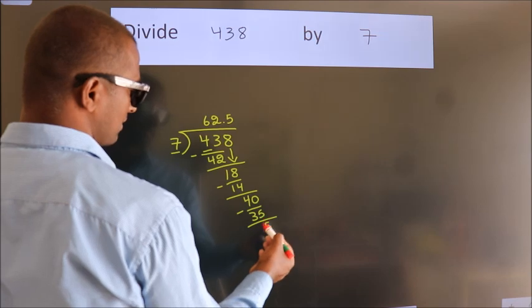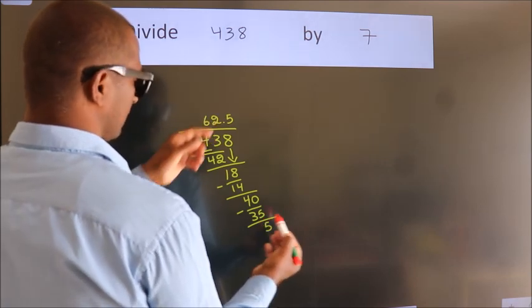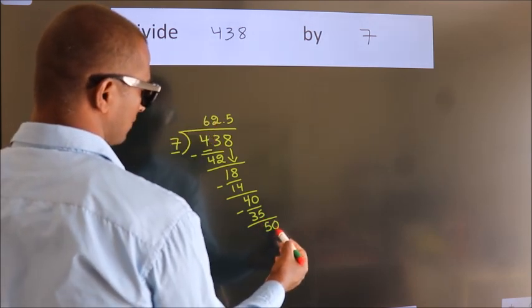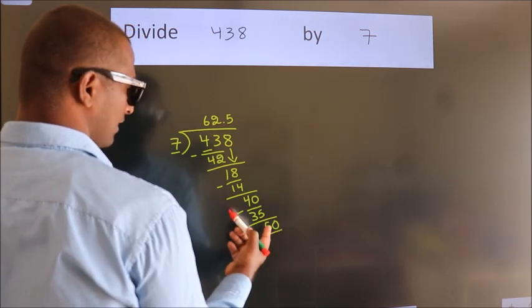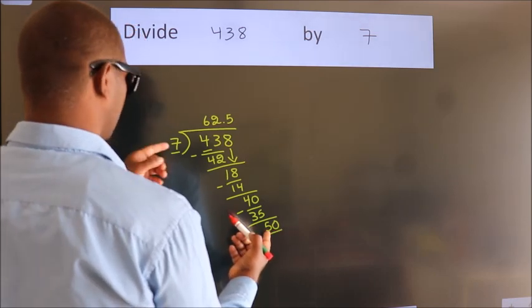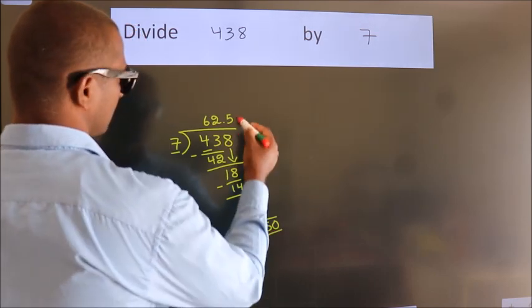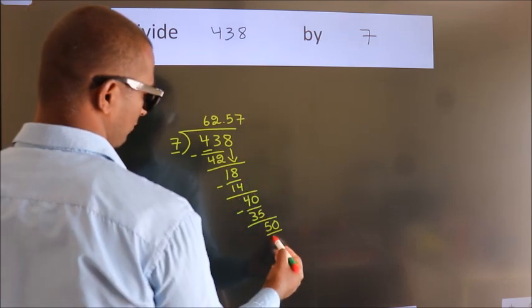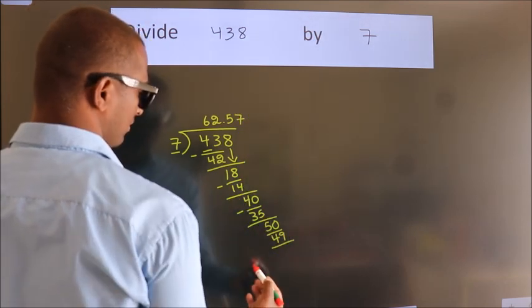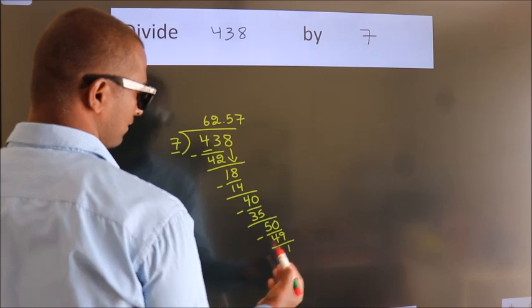After this, we already have the decimal, so directly take 0, giving us 50. A number close to 50 in the 7 table is 7 times 7 equals 49. Now we subtract, we get 1.